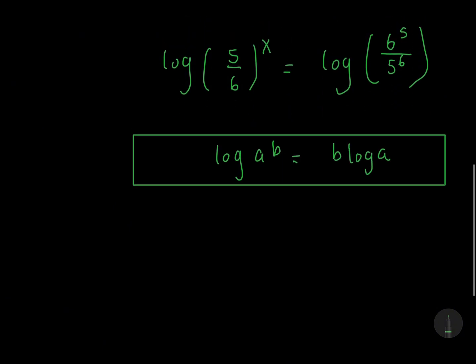So in this case, 5 over 6 is our a and x is our b. So we'll have x log 5 over 6 equals to log 6 to the power 5 and 5 to the power 6.